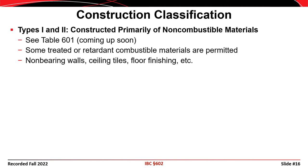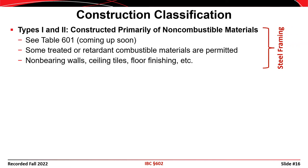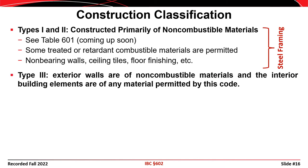Construction Types 1 and 2 are basically constructed of non-combustible materials, with the exception of some treated or fire retardant materials used in non-structural applications. Steel frame structures are generally either Type 1 or Type 2. Type 1 is sometimes referred to as fire-resistant construction and Type 2 is sometimes referred to as non-combustible construction. Type 3 construction is characterized by buildings with exterior walls made of non-combustible materials while the remaining portions of the structure are made up of any material permitted by the code.